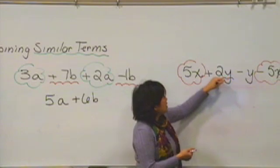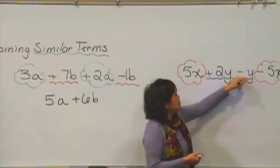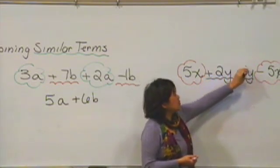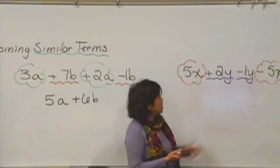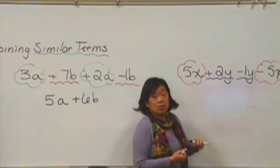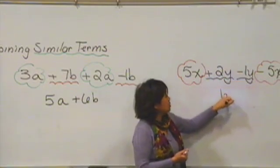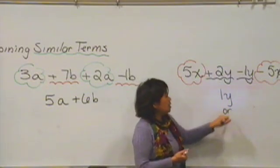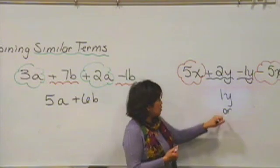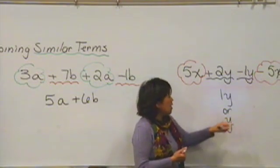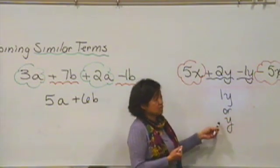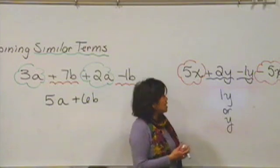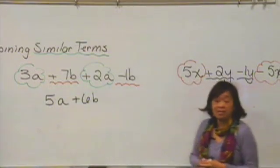Here, we have 2y and minus y. And again, if you'd like, you can put a 1 here if it makes you feel more comfortable. And 2 minus 1 is 1. So in this one, our answer is going to be 1y, which you can write like that, or similarly, you can also write an equivalent answer. You could just write y. So this way or this way, both of those would be correct. And that's how you combine similar terms.